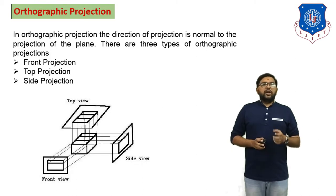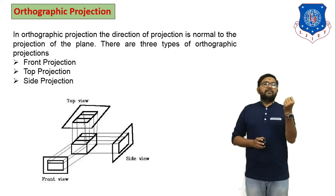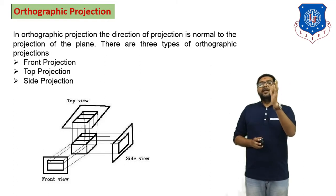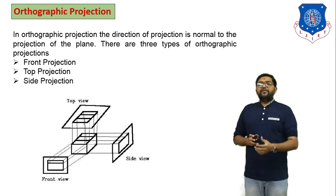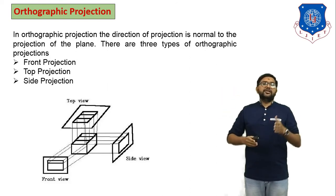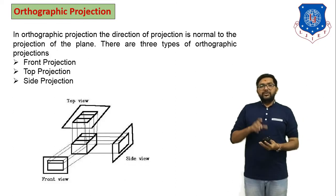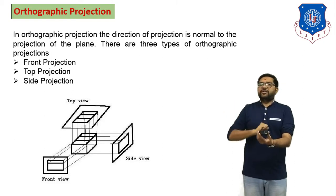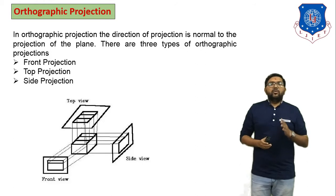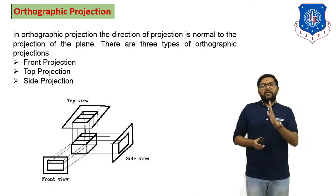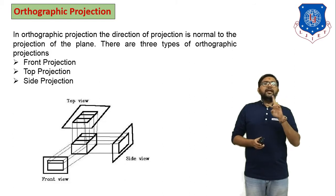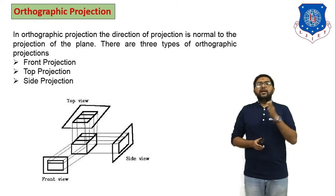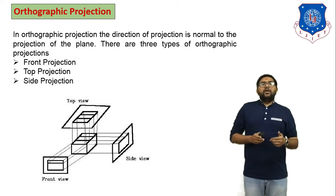In orthographic projection, if you have a 3D object you have to observe it from different directions. If you observe the object from the front side, that is the front projection. From the side view, that is the side projection. From the top side, that is the top projection. So in orthographic projection a total of three views are generated: front view, side view, and top view. Inside the side view there are two parts — either left-hand side view or right-hand side view.